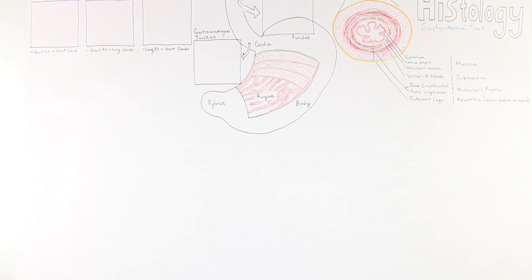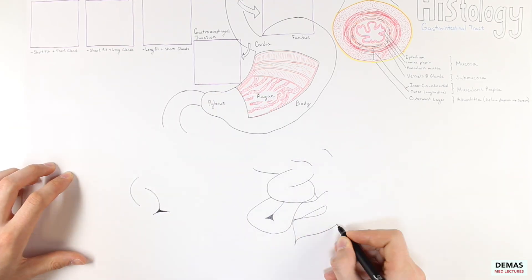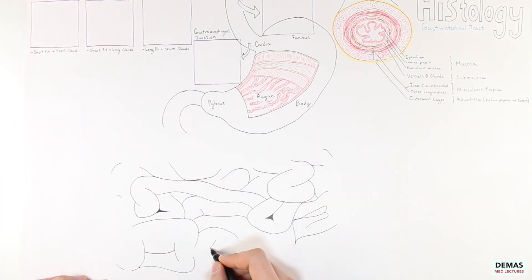During the first part of this lecture, we looked at the general organization of the gastrointestinal tract. We then focused on the specific histology of the esophagus as well as the stomach, and we're going to now continue with the small intestine. The small intestine is very important for absorbing nutrients, and it has a tremendous surface area.